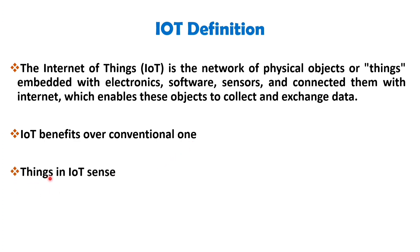Now let's discuss the concept of 'Things' in the context of IoT. Things can encompass a wide variety of devices such as heart monitoring implants, biochip transponders on farm animals to check their health, electric clamps in coastal waters, automobiles with built-in sensors, DNA analysis devices for environmental and food-related purposes, and field operation devices that aid firefighters in search and rescue operations. These devices utilize various existing technologies to collect valuable data, which is then autonomously shared among other devices.